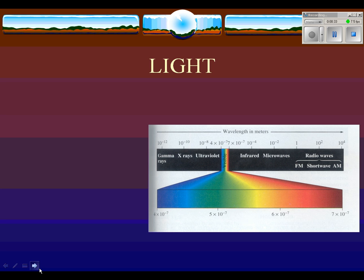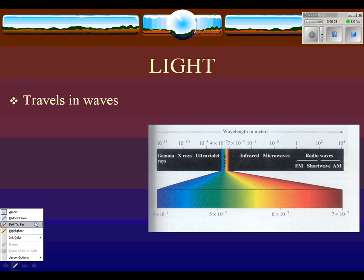The first thing we need to talk about to understand vision is light. Light is considered, if you've had physics, both a wave and a particle. But for our purposes, we're going to call it a wave. It's part of the electromagnetic spectrum, which you can see displayed here on the screen.